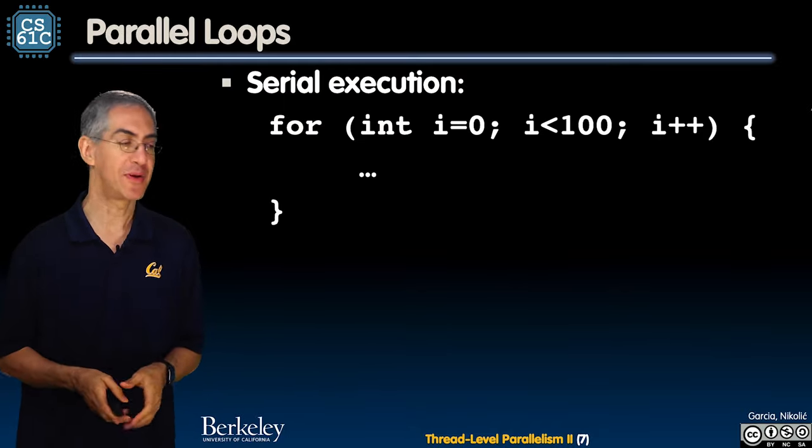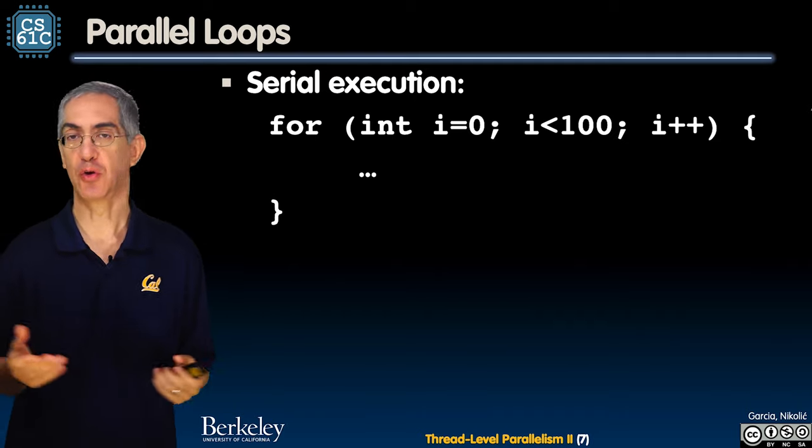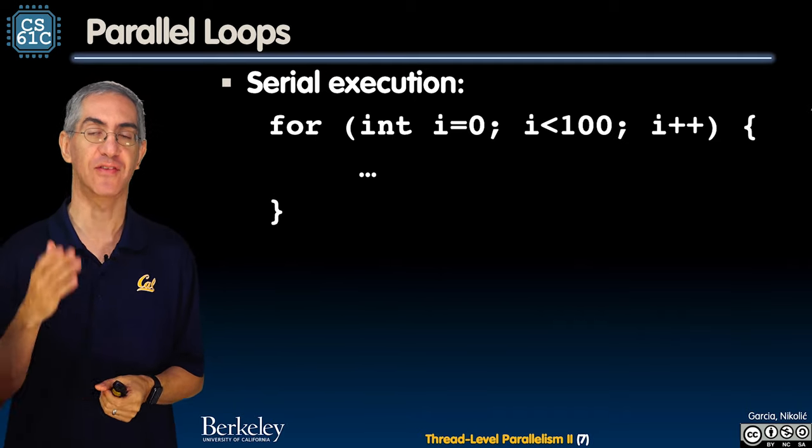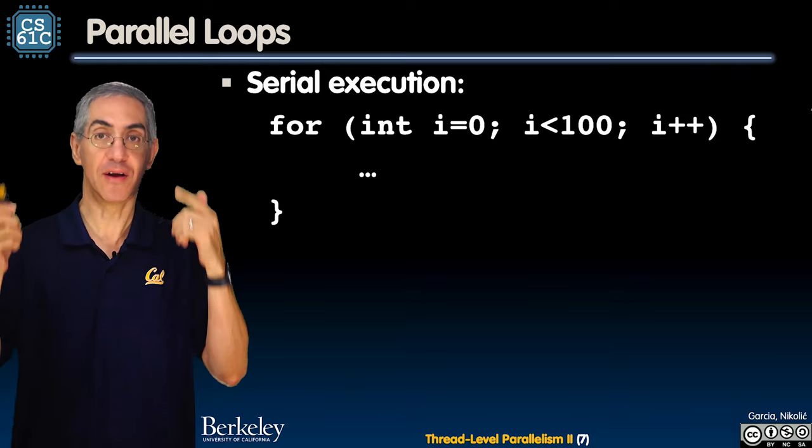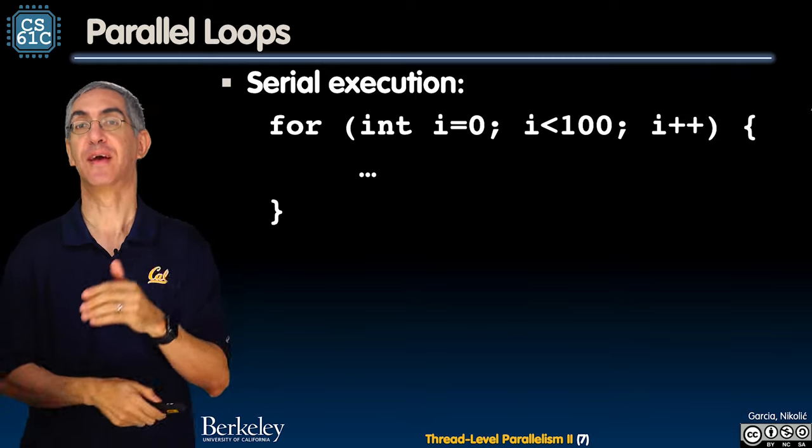If you had a parallel loop, here's a very simple loop that has a hundred iterations with values 0 through 99 inclusive, and you just have one thread doing all of that.